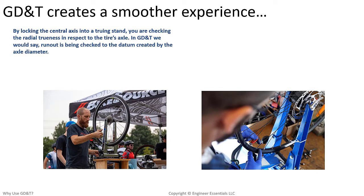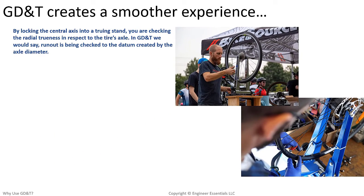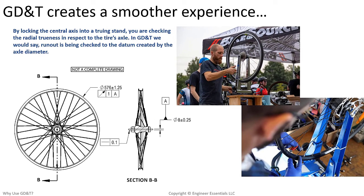In the real world, a rim can be maintained or fine-tuned after manufacturing on what's called a truing stand. Runout is checked by attaching the axle of the tire to the truing stand and then inspecting the radial deviations with an indicator or feeler gauges. The runout feature control frame will refer directly to the datum feature that should be used to create the datum axis for inspection, and size can then be verified in a separate measurement.